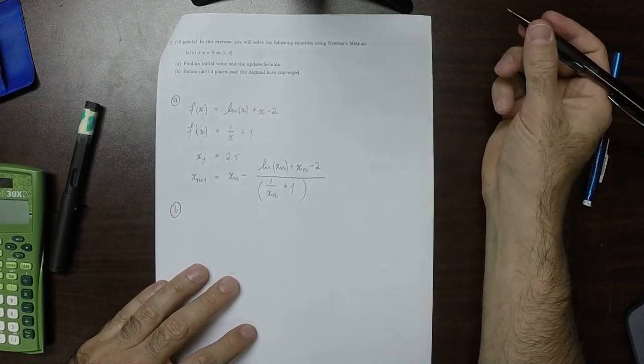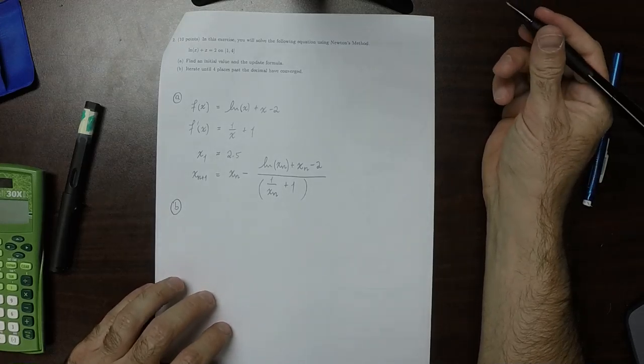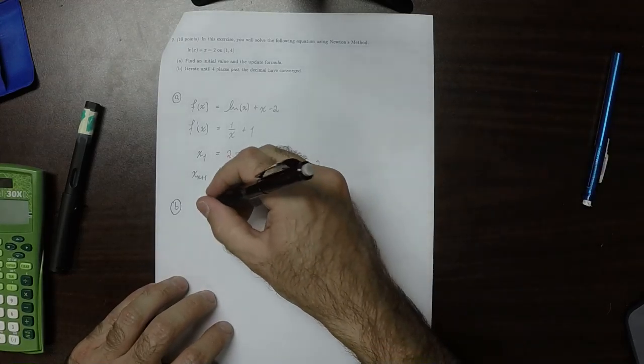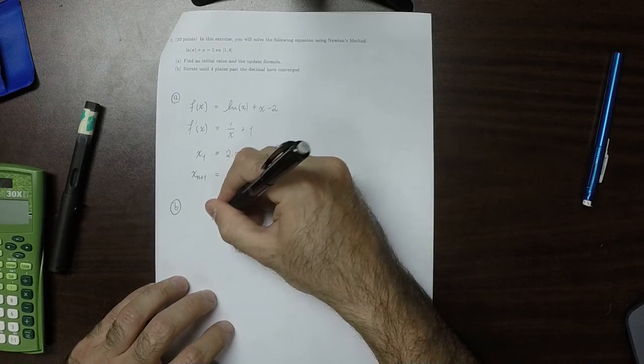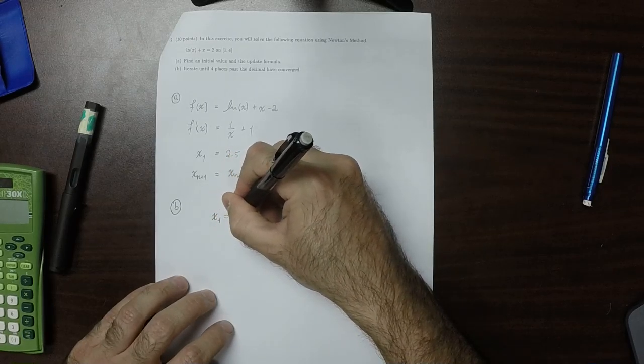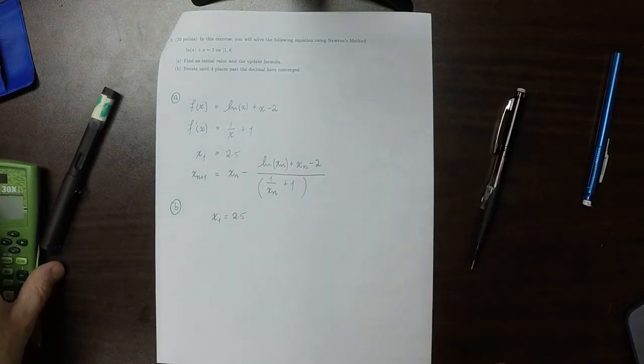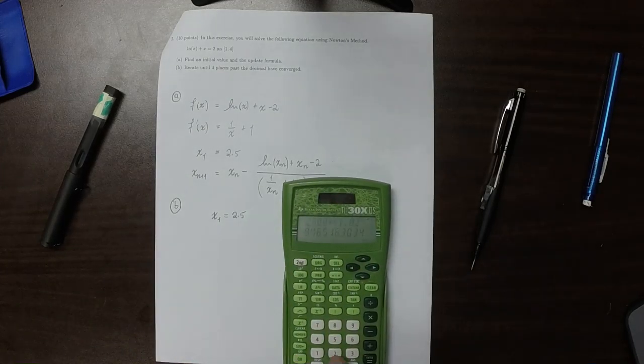And then part b. Iterate until 4 places past the decimal have converged. Well, x1, that's 2.5. So I'll type that into the calculator. 2.5.